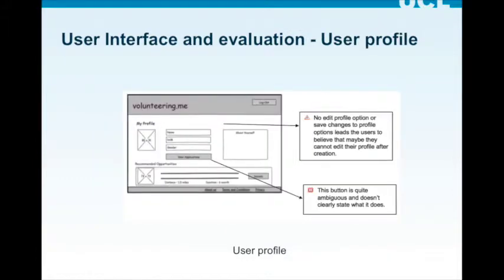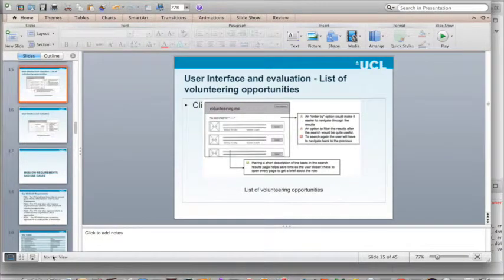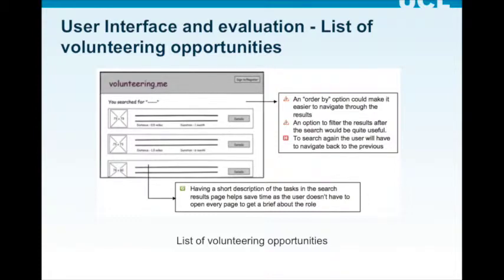This is the user profile page. The biggest problem is that there is no edit profile option, and the view application button is ambiguous as it doesn't clearly state what it does. Next is the list of volunteering opportunities page. A filter function would be very useful in sorting the list of volunteering activities, and an order-by function would help the user find the opportunity that suits them most. One benefit of this design is that the short descriptions of the tasks help the user save time while finding an activity.